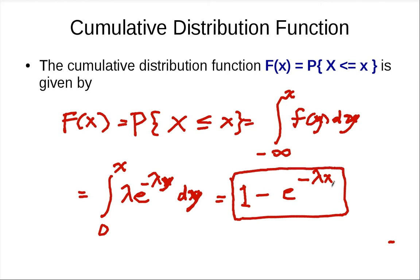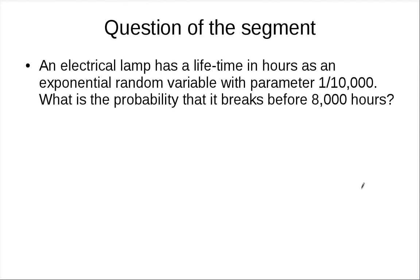From these two definitions, let's look at an example. If you have an electrical lamp whose lifetime in hours is an exponential random variable with parameter λ = 1/10,000 hours, what's the probability that it breaks before 1,000 hours? Think about this, finish the calculation, and then please proceed to the next clip.